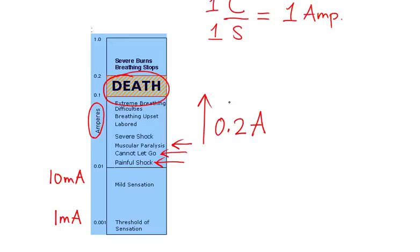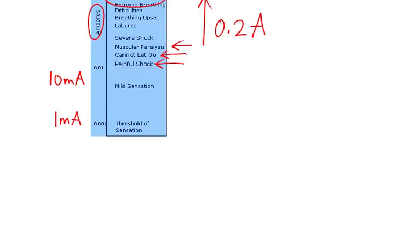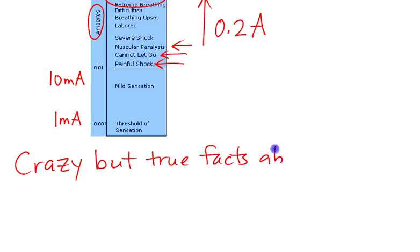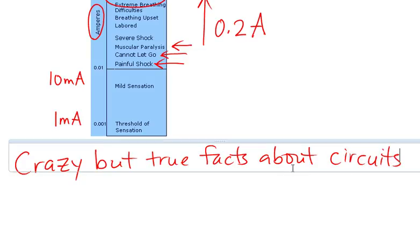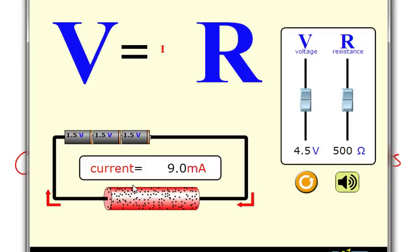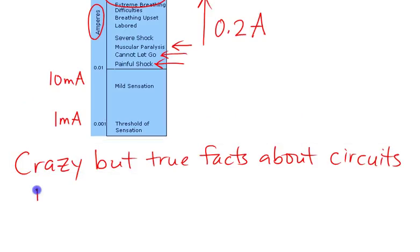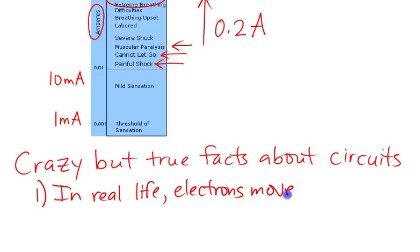So, just a couple of quick facts about circuits, and then we'll be done. Okay? The first thing, so this is crazy but true facts about circuits. Okay, first of all, in real life, it's the electrons that are moving. Okay? In real life, the electrons move.